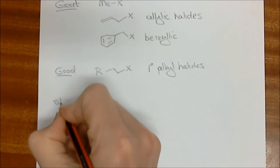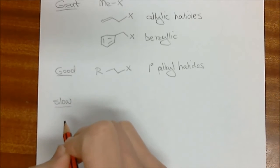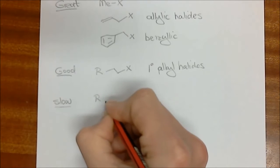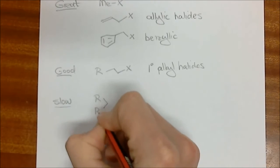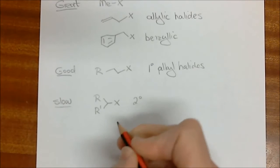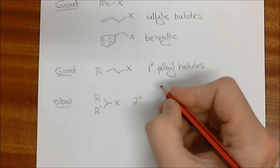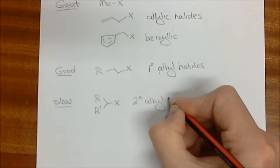Then we go to the next two groups which are not so great. The secondary alkyl halides are fairly slow. And so this is a secondary alkyl halide. They don't alkylate very rapidly, but you can get them to work.